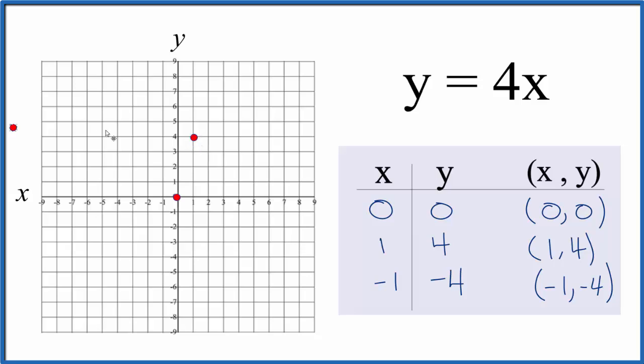And then x is negative one, we have negative four for y, so negative one then down one two three four. So you can see we could just put a line through this, put some arrows out here, show it goes to infinity and this is the graph for y equals 4x.